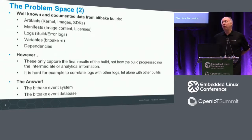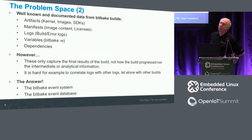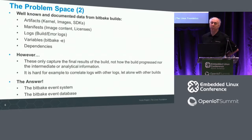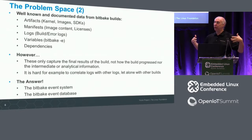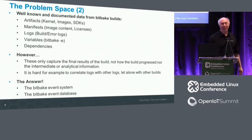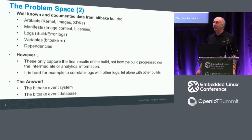There are well-known outputs from BitBake builds: artifacts like kernels and SDKs, manifests with licenses and image content, logs - probably the most important - your variables, and dependency trees. However, these only capture the final results at the end of the build. They don't show you what happened in the meantime, the intermediate values. It's also hard to correlate what happened between build logs. The answer I propose is the event system already part of BitBake and the event database that comes with Toaster.